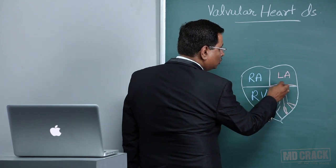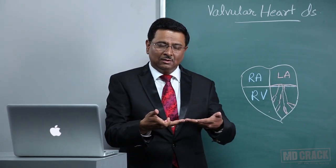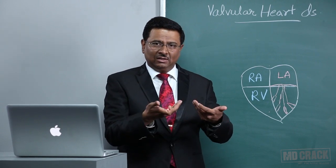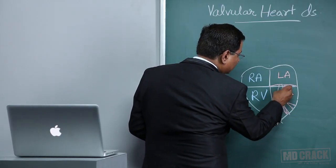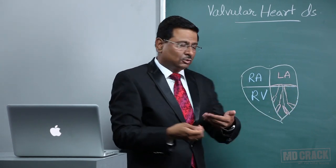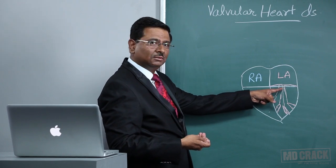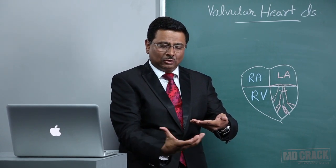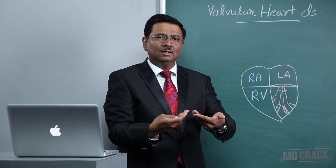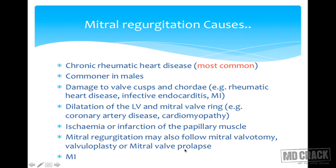Any damage to the valve cusps can give rise to regurgitation — meaning blood from the left ventricle regurgitates into the left atrium. It can also be due to ischemia or infarction of the papillary muscle. The chordae tendineae arise from the papillary muscles and hold the cusps, so if infarction occurs, the chordae are lost. Damaged chordae cannot hold the cusps, causing them to bulge into the left atrium during ventricular contraction.